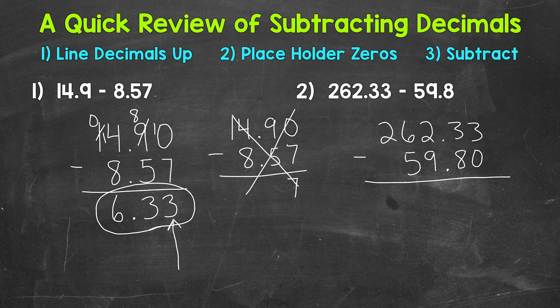So we'll start with the hundredths. 3 minus 0 is 3. The tenths place, 3 minus 8, well, we need to borrow. So borrow from the 2, that's a 1. And we have a 13, so 13 minus 8 is 5. We can bring our decimals straight down into our answer.